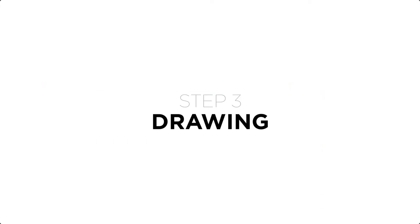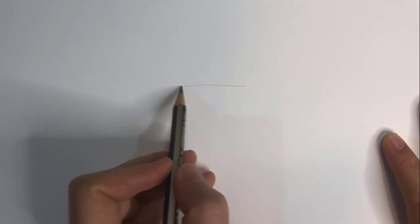Step three is drawing the design onto the rock. For any design, regardless of how easy it is, I'd recommend doing a quick sketch up on paper first to get familiar with it. So let's go through how to draw the sheep.